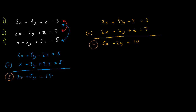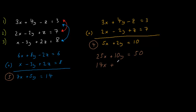Using equations 4 and 5 I'm going to find the value of x. To do this I'm going to get rid of the y's in both equations. So I'm going to multiply equation 4 by 5 and equation 5 by 2. That gives 25x plus 10y equals 50, and for equation 5 we get 14x plus 10y equals 28.